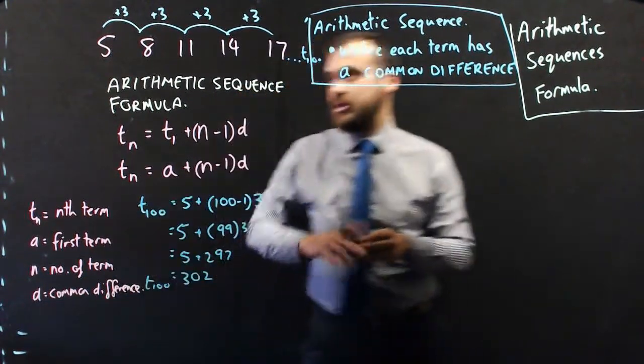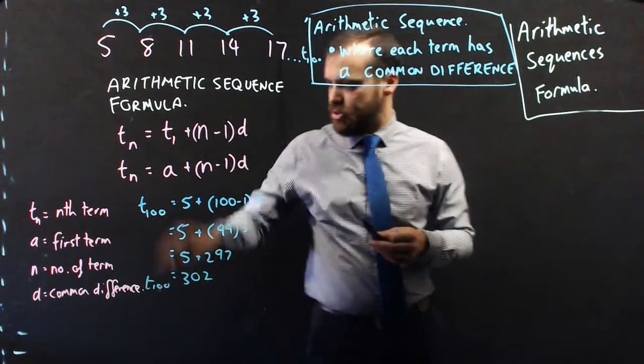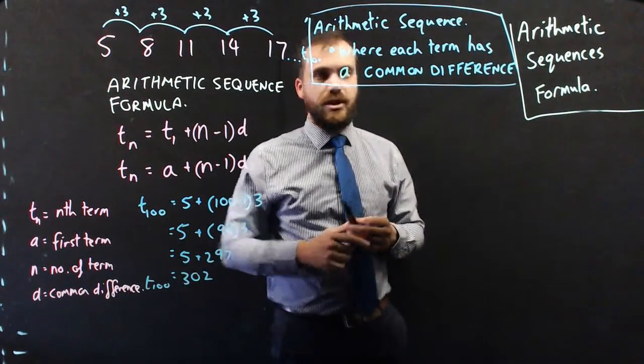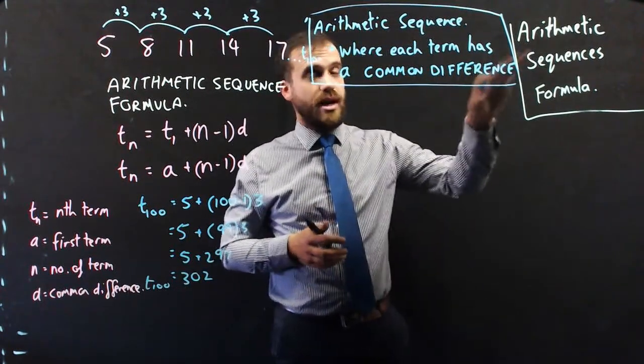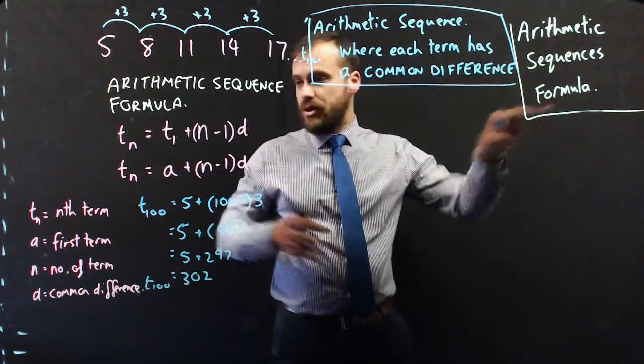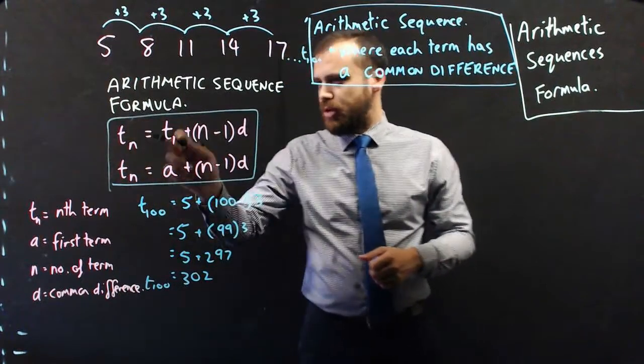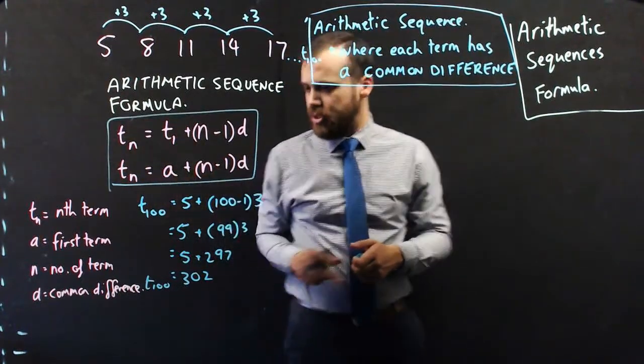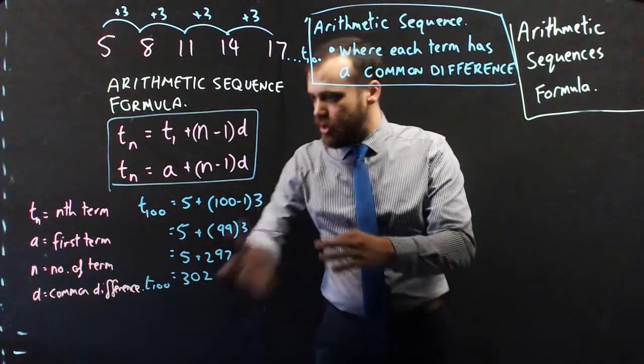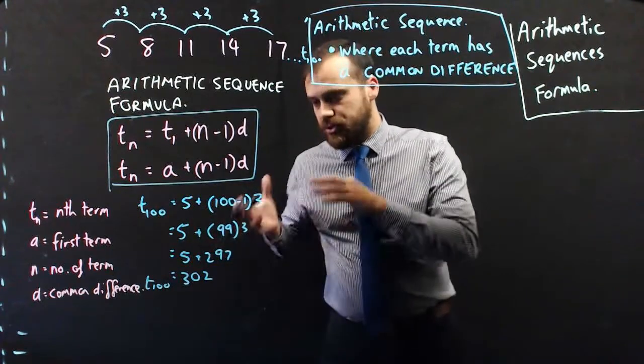So, in this particular case, in this particular sequence, term 100 equals 302. All right, we've covered a lot there. You know what an arithmetic sequence is now. You know what the arithmetic sequence formulas look like. They're both the same, so don't be surprised if you see this one or this one. And, finally, you know how to find the nth term.